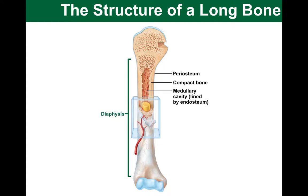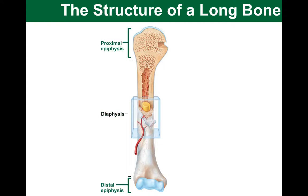At the ends, we have the epiphysis. These are mostly spongy bone, and at the very ends there is articular cartilage. They serve the purpose of protecting, sliding, and reducing friction as one bone makes contact with another bone. Without this layer, we would have damage of the bone ends.